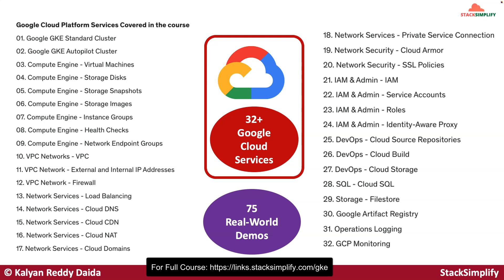When implementing these GKE clusters, we are in need of using compute engine resources like virtual machines, storage disks, storage snapshots, storage images, compute engine instance groups, health checks, and network endpoint groups. Also from VPC, we use the default VPC with default subnets, external and internal IP addresses, and VPC network firewalls wherever required.